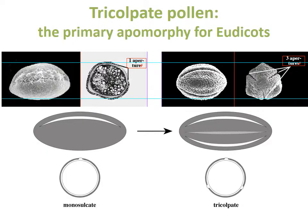The primary apomorphy for eudicots is having tricolpate pollen — a type of pollen in which there are three apertures along the surface. This is in contrast to the ancestral state of monosulcate pollen, in which there's only a single aperture through which, for example, the pollen tube can germinate. You may recall seeing images of monosulcate pollen in previous lectures when I showed pollen from Lilium in the monocots and also magnolian pollen.